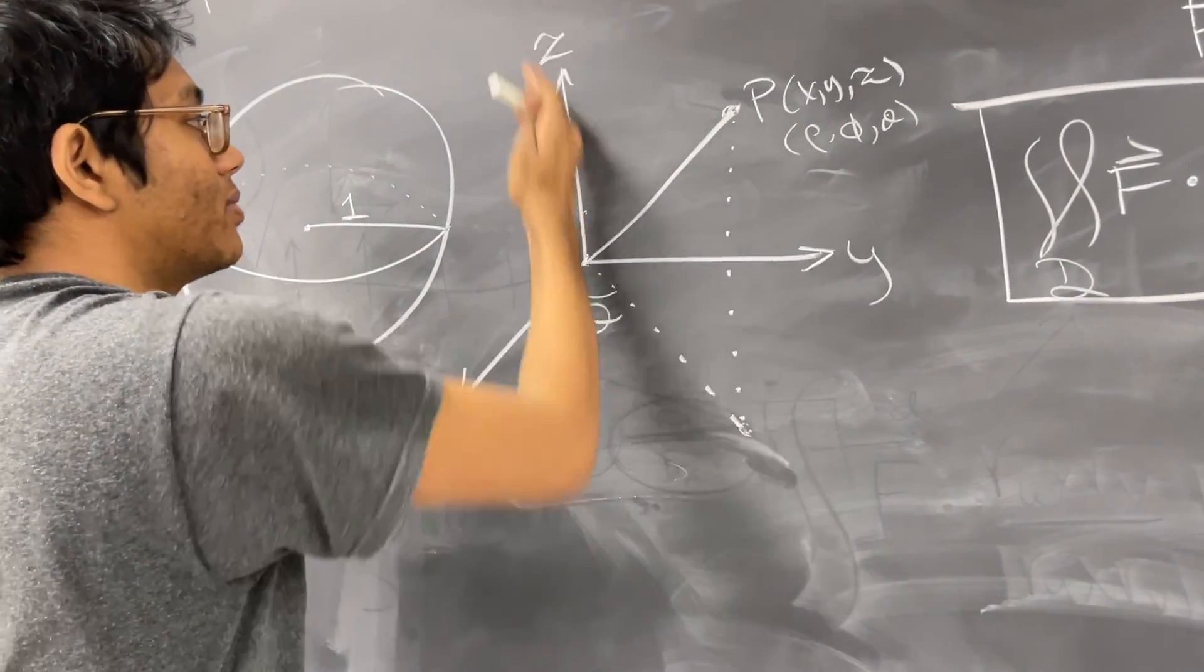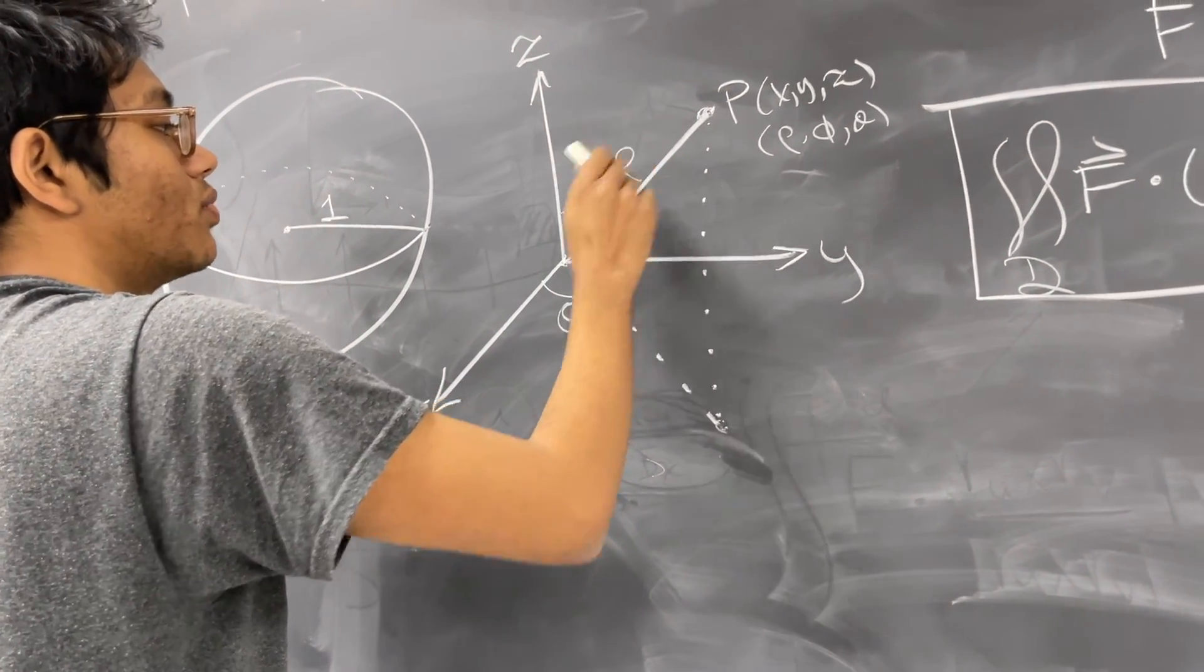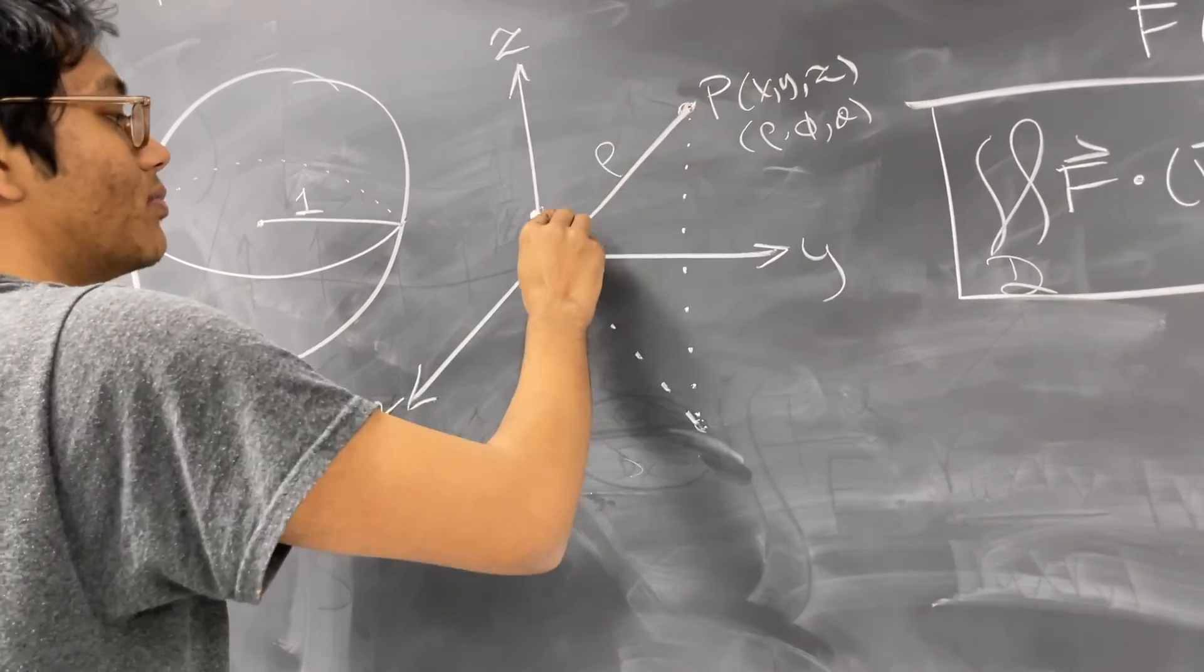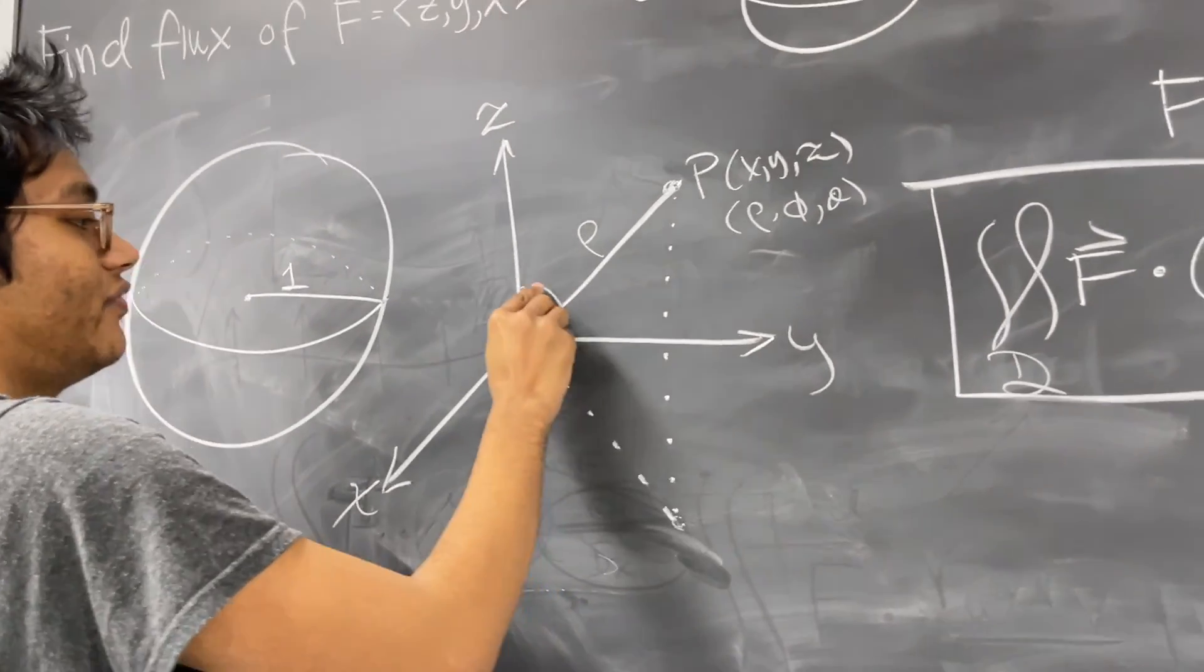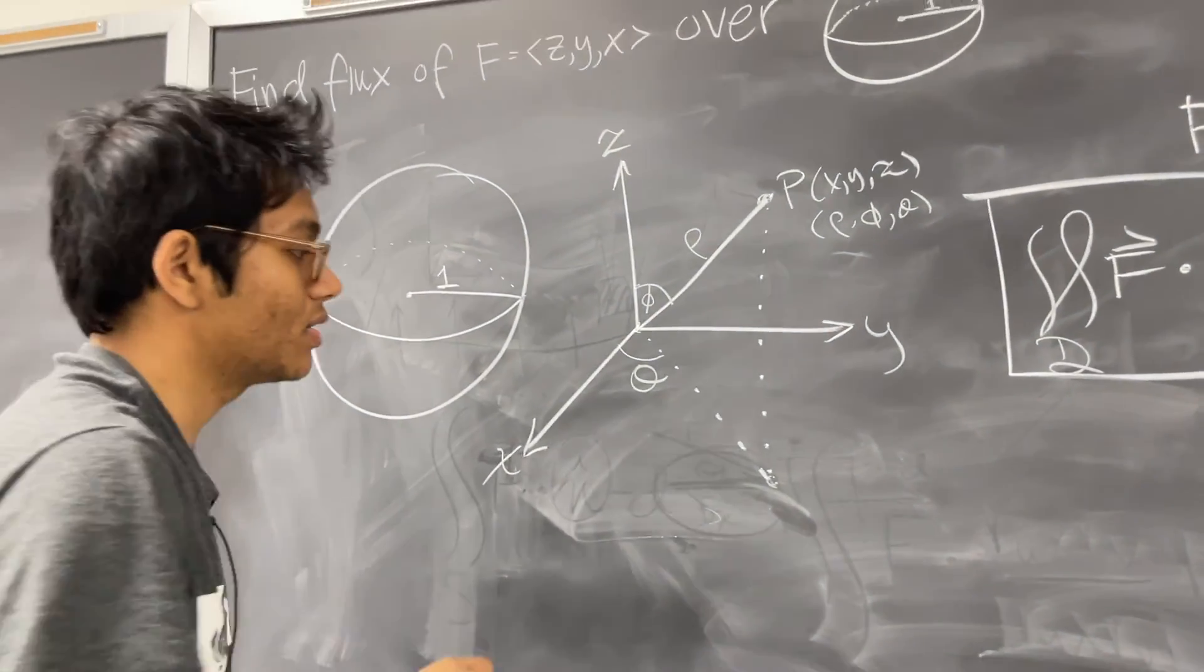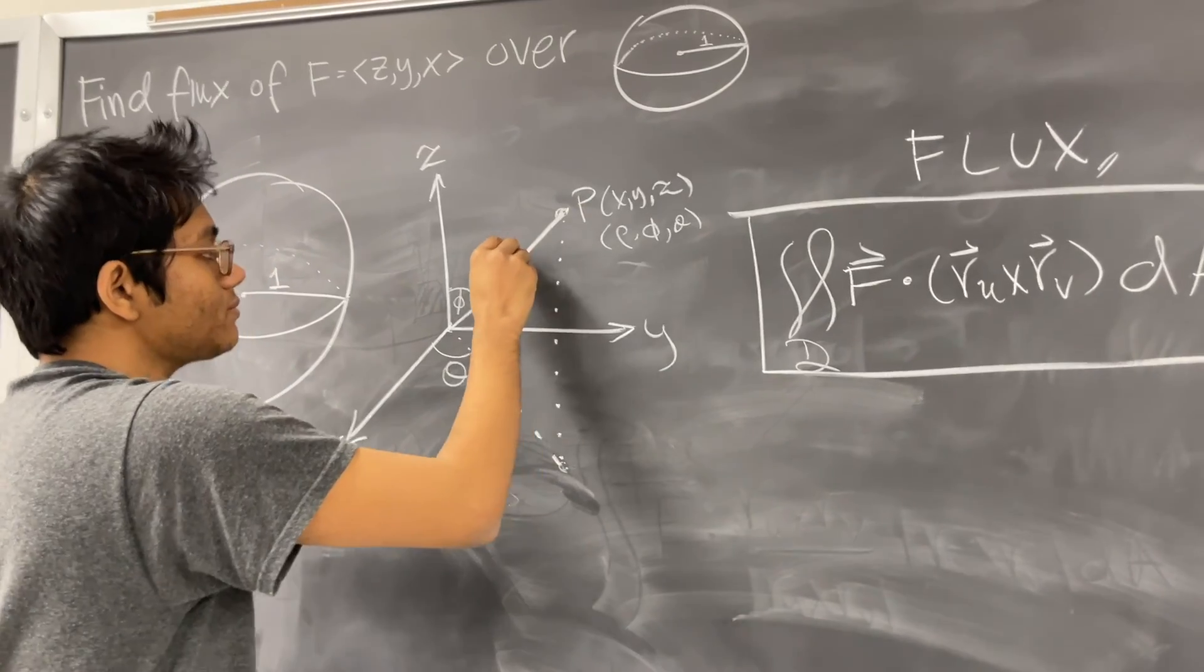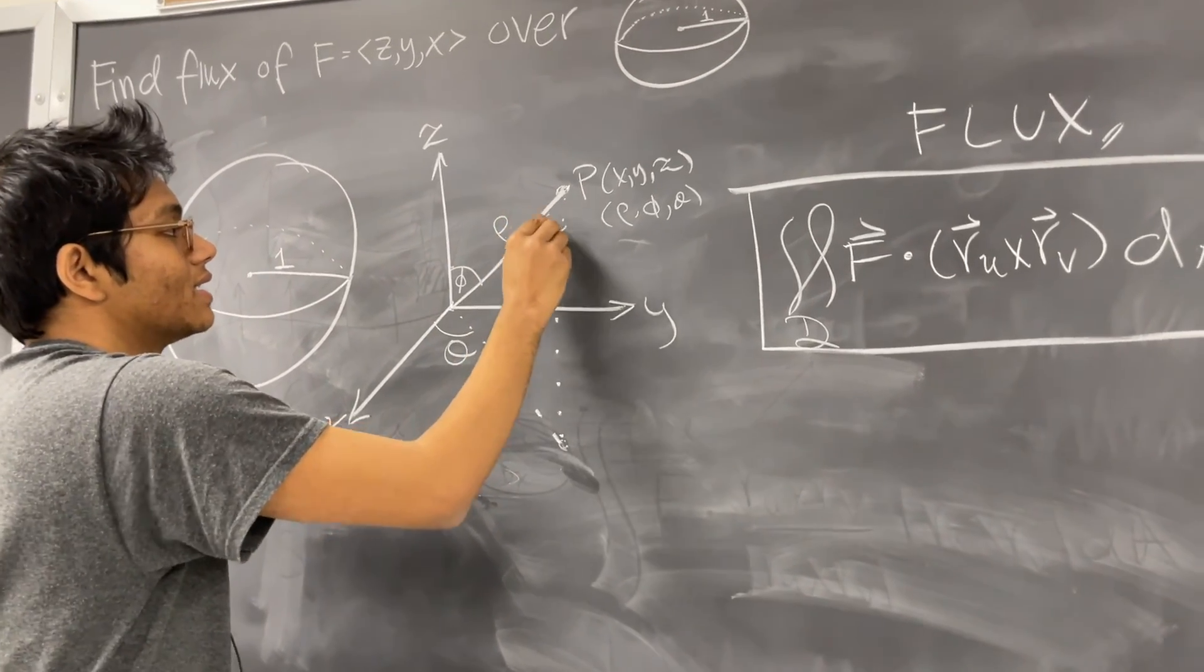And we call the angle between the Z axis and let's call this rho, which is the distance between the origin and point P. We call this phi. And so you get that since this is phi, this is also phi.